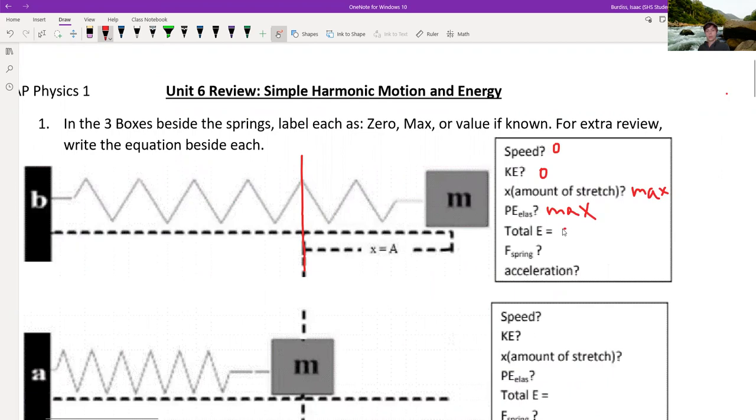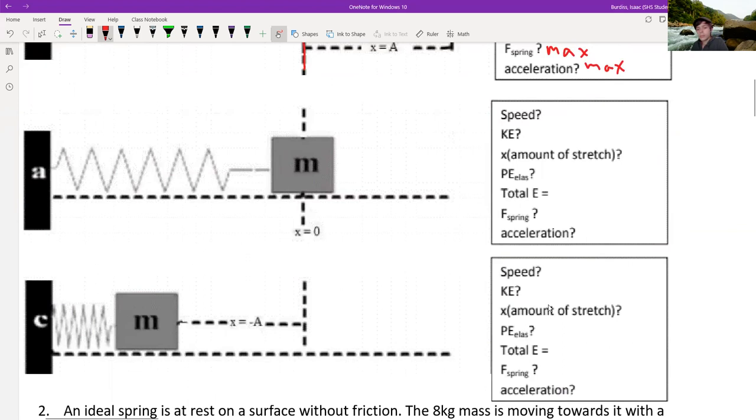And total energy conserved. So I'll just say constant. And then the force, well, by Hooke's law, we know that is this. So if the distance increases, so would the force. So you can say max for that. And force equals mass times acceleration. So if the force was max, so would the acceleration be. And then that's the same for C, so same as A.